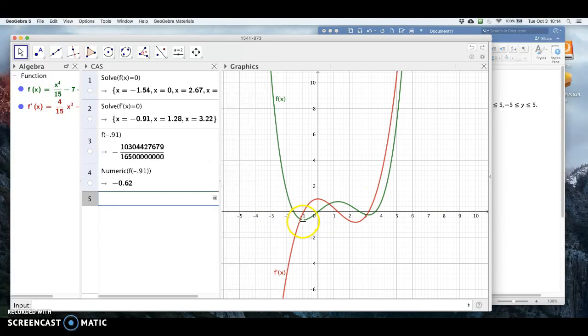So right here, this relative minimum would be at x equals minus 0.91. And the value of the green function would be about minus 0.61.